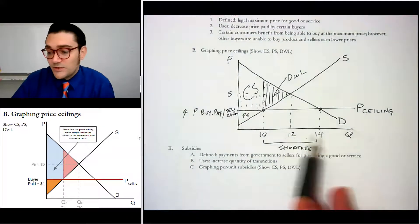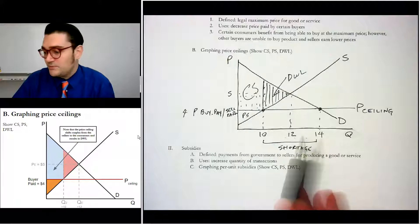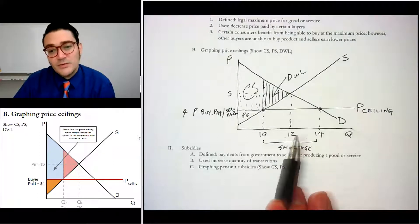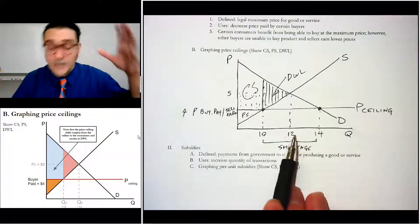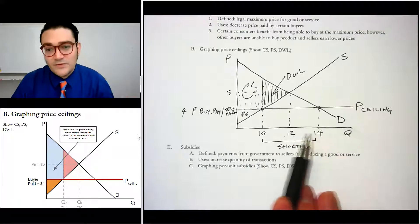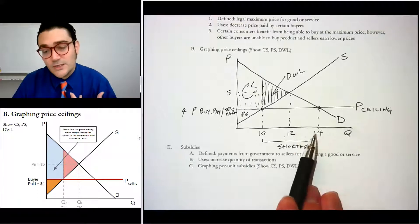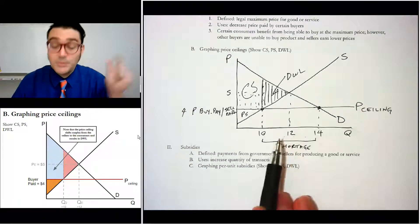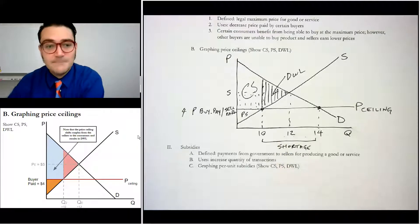Now, we obviously are concerned about the 14 people who are now, or the four people who don't get the product. But we aren't really worried about the two people who decided, oh, now that the price is so low, I'm going to stand in line. Well, these people, they weren't going to get it before anyway. So they don't count as part of the deadweight loss. But the 10 to the 12, they do count as the deadweight loss because those people used to be getting it before the price ceiling.